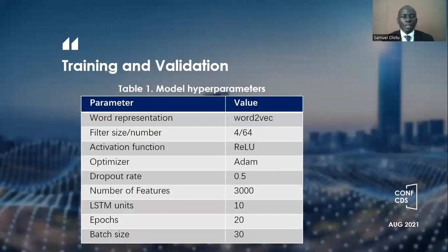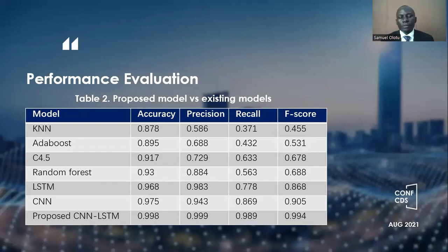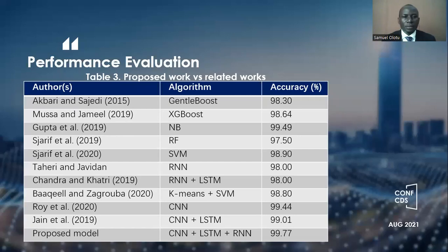Training and validation is carried out using a number of parameters, and the optimal values of these parameters are obtained over several experiments. Performance evaluation is carried out after training and testing the model by comparing it with existing models such as KNN, AdaBoost, decision tree, random forest, and LSTM with CNN. The results show that the accuracy, precision, recall, and F-score are highest for the proposed model, and the proposed model also performs better than other existing related works in accuracy.